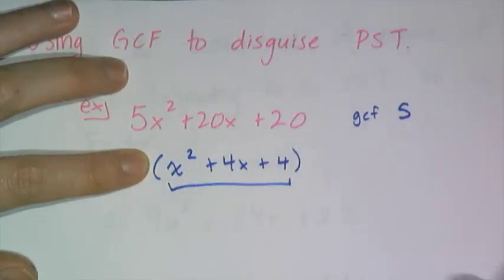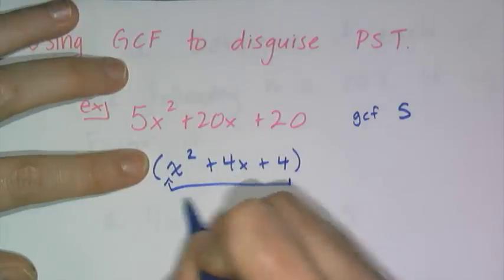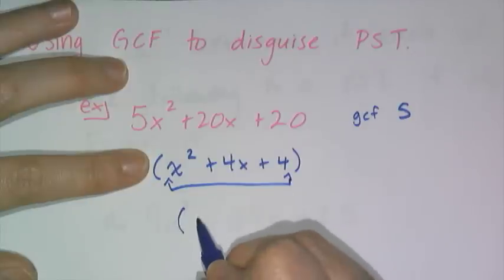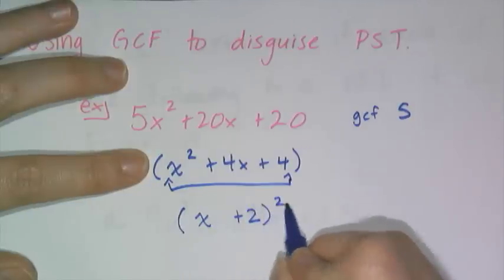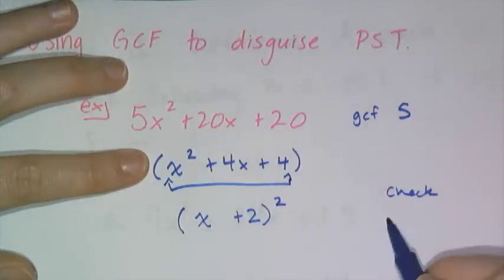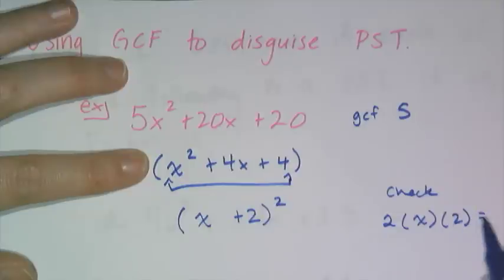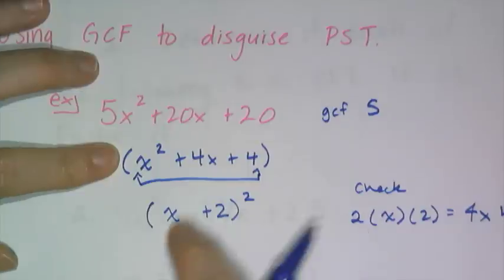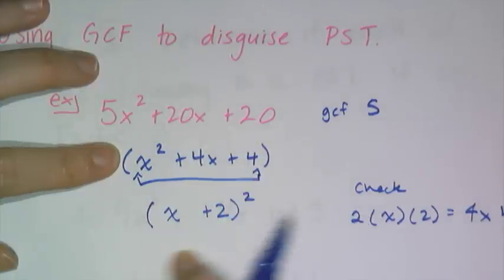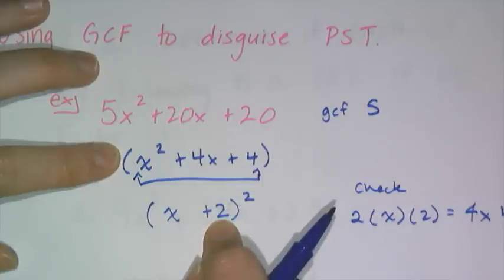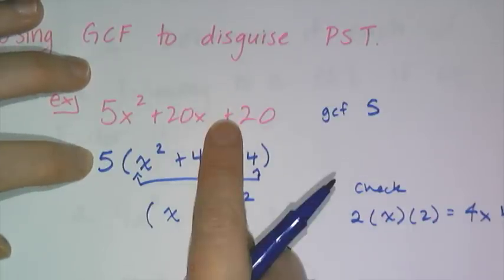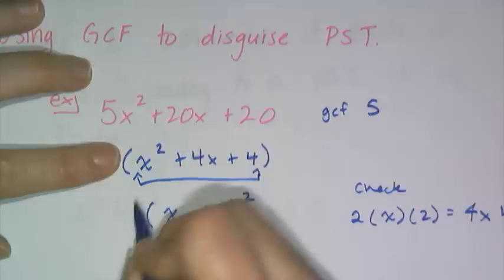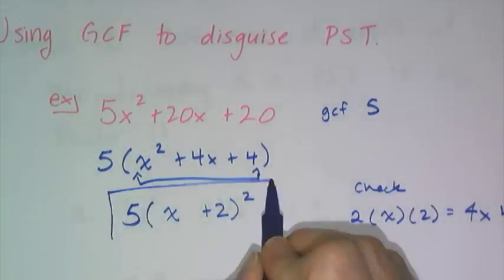Looking at x squared plus 4x plus 4: x squared is a square, 4 is a square, so it looks like it might be (x plus 2) squared. Checking: 2 times x times 2 gives 4x, which is exactly what we need. So x squared plus 4x plus 4 factors as (x plus 2) squared. Don't forget the 5 out front — factoring is just rewriting, not division. The fully factored form is 5 times (x plus 2) squared.